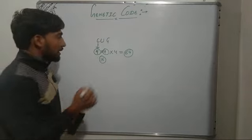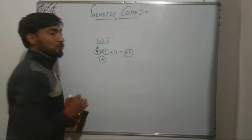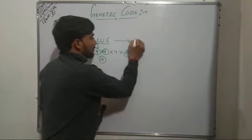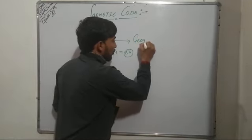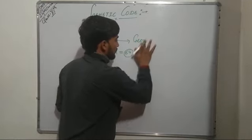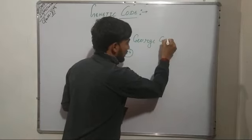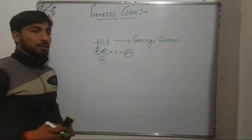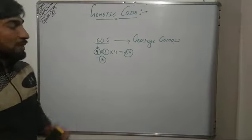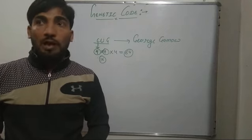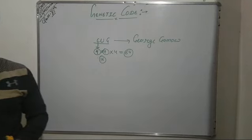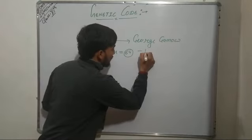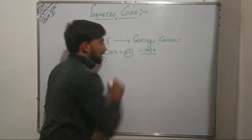This hypothesis — that a sequence of 3 nitrogenous bases codes for one amino acid — was given by George Gamow, and it was given in 1954.